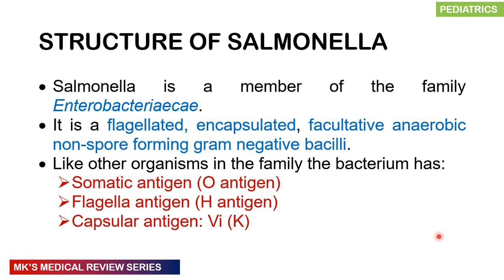What is the structure of Salmonella? It's part of a family known as Enterobacteriaceae. It is flagellated, encapsulated, facultative anaerobic, non-spore-forming, gram-negative bacilli. Like all other organisms in the family, it possesses certain characteristic antigens. Keep this in mind because we can check for these antigens using specific tests to make a diagnosis of enteric fever, and some of these antigens are essential in the pathogenesis of the condition.